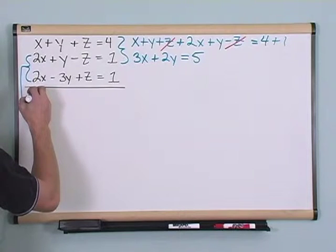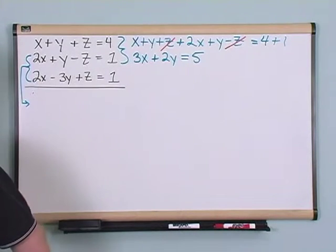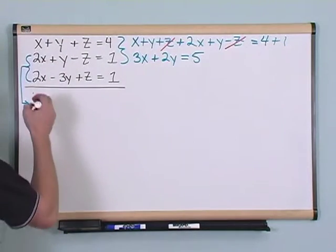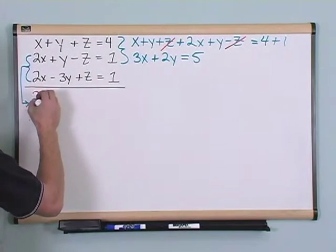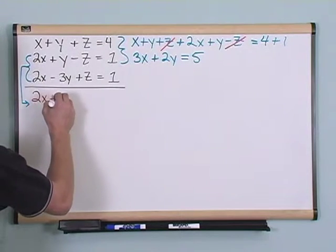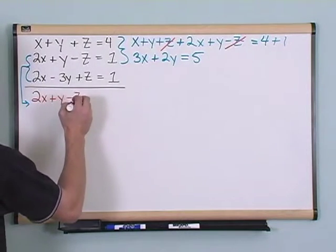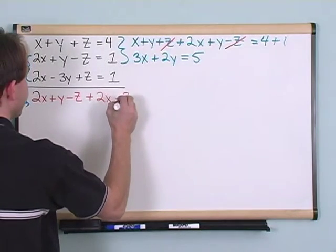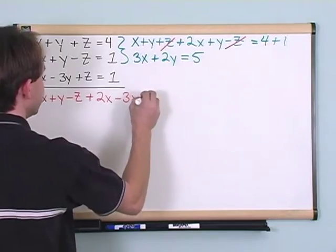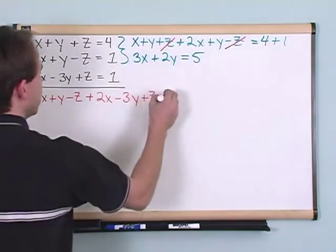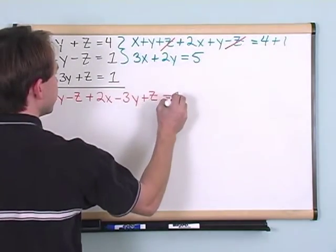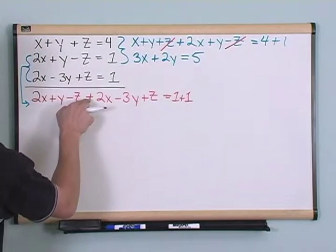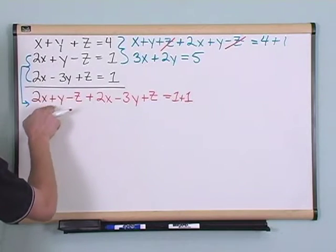So what I'm going to have is on this side. In fact, let's change color so that we know that we're doing something a little different here. We're going to have 2x plus y minus z plus, and then I'm going to add this in, 2x minus 3y plus z equals 1 plus 1, like this. 2x plus y minus z, this.